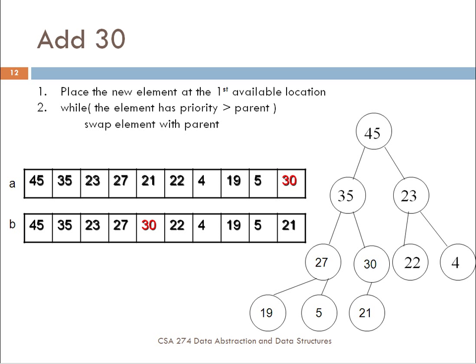When we do this, we get an array representation that initially looks like array A here, where the element is added to the end of the array. Then you check whether its parent is greater than it. With all heaps, the parent is at the floor of the location minus 1 divided by 2. So if we look here, we have indices 0 through 9, the floor of 9 minus 1 over 2 is 4 — that is the parent of this node. Then you compare 21 with 30; 30 is greater than 21, so you swap it, and what you end up getting is the heap shown here on the right.